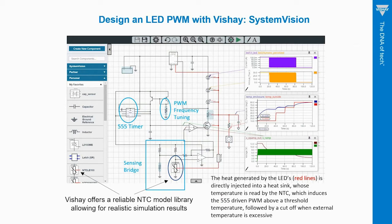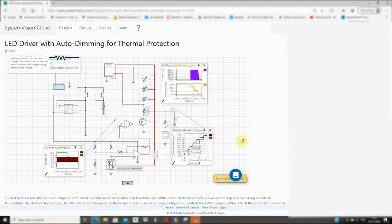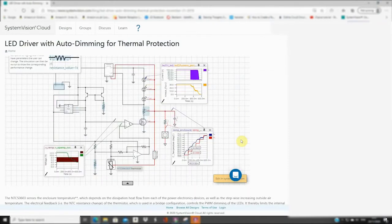Another example of circuit simulation is this LED pulse width modulation, where a 555 timer-based circuit pulses the voltage applied onto an LED bench in order to mitigate the thermal effect of the ambient temperature increase. This example is featured on another Vishay partner website, System Vision Cloud, where you will find a series of thermal designs involving Vishay thermistors.